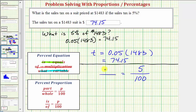And then for this ratio here it's a comparison of the part to the whole. And because the sales tax is going to be part of the sales amount, the unknown t goes in the numerator and the entire sales amount of 1,483 represents the whole, which is in the denominator of this ratio.